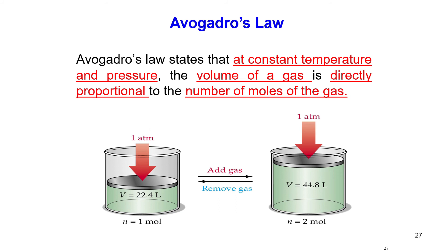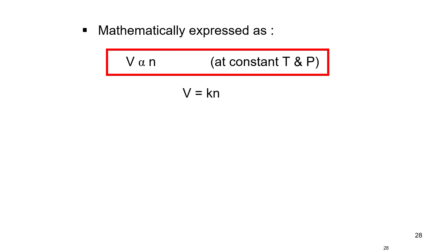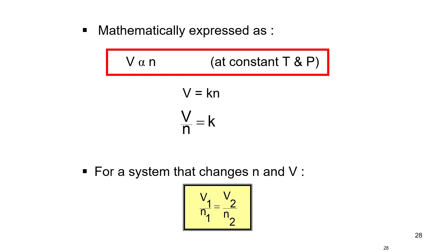Avogadro's Law states that at constant temperature and pressure, the volume of a gas is directly proportional to the number of moles. At 1 atm, 1 mole of gas occupies 22.4 liters; 2 moles occupy 44.8 liters. Mathematically, V ∝ n, so V = kn, or V/n = k. For two states: V₁/n₁ = V₂/n₂.